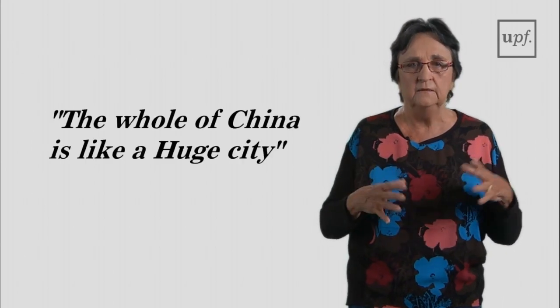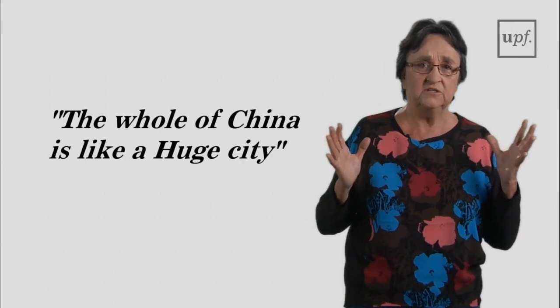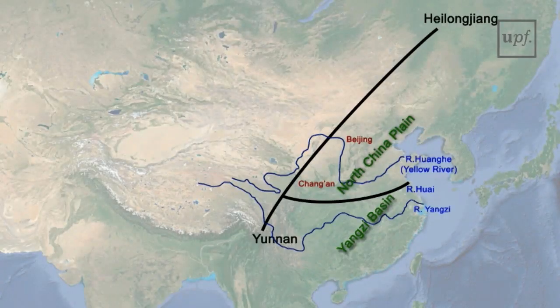Seeing it prompted Matteo Ricci to say in the 16th century that the whole of China was like a huge city. To the west of the Yangtze Basin lies Sichuan, an extremely rich region the size of the Iberian Peninsula, which has been an independent state many times throughout Chinese history. South of Sichuan is Yunnan, home of many non-Chinese dynasties. It was incorporated into the Chinese world only a thousand years ago by armed forces of both Mongols and Ming.